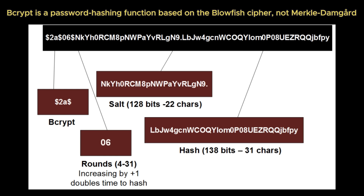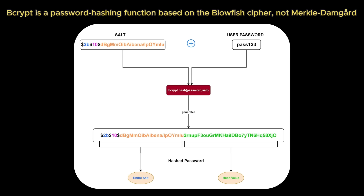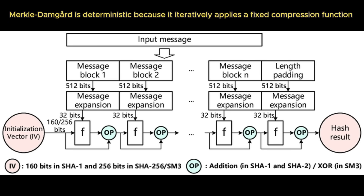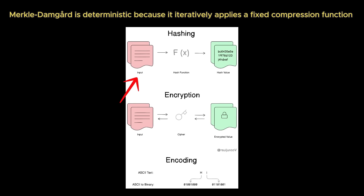Password-oriented algorithms like bcrypt or Argon2 build on this by deliberately adding slow, memory-intensive steps to make brute-force attacks computationally infeasible by increasing the cost of testing each guess. This block-by-block processing model is why hashes are deterministic — the same input yields the same output — yet they're effectively irreversible.